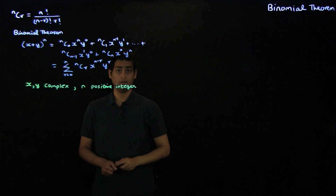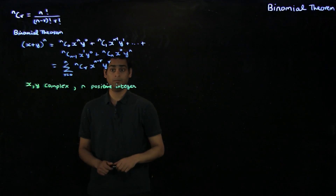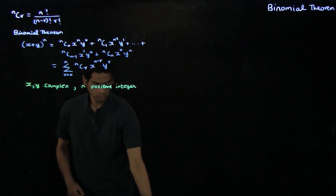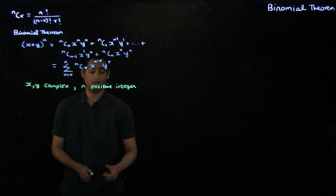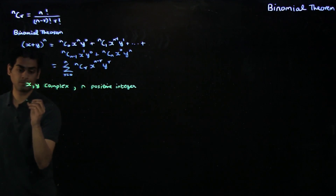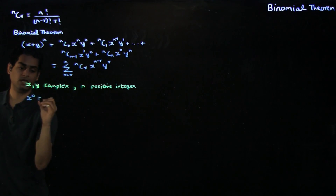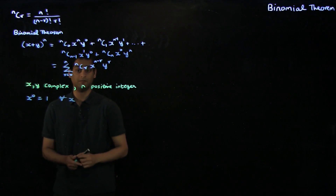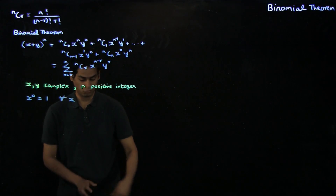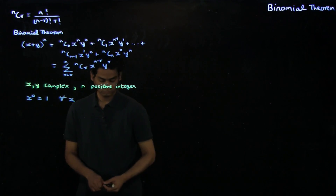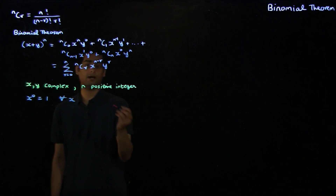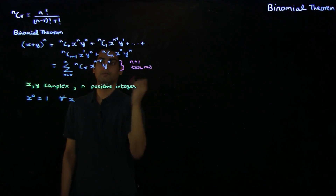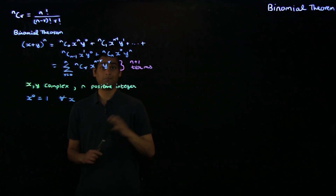I would like to mention that generalizations of the binomial theorem for the case when n is any real number also exist. In the expression of the binomial theorem, we take x to the 0 to be equal to 1 for all complex x. So irrespective of the value of x, we define x to the 0 to be equal to 1. Notice that there are n plus 1 terms in the binomial theorem, not n terms.